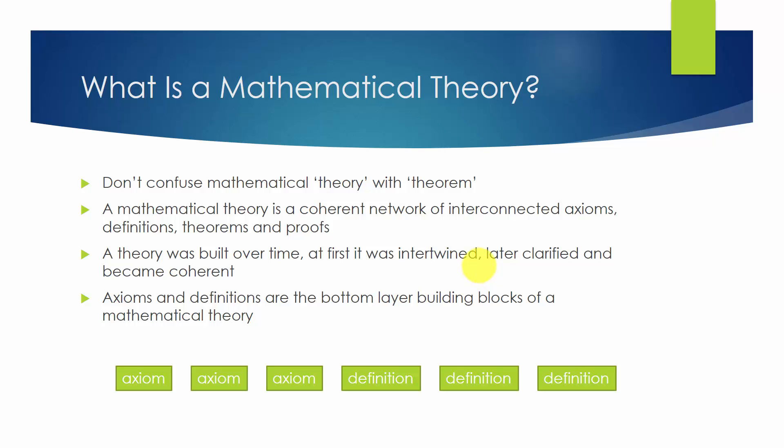But mathematicians want everything to fit into a coherent overall structure. So they adjusted axioms, definitions, theorems, and proofs as groups to capture both individual concepts and logical relationships. Axioms and definitions are the foundation of a theory, and they are at the most bottom layer.